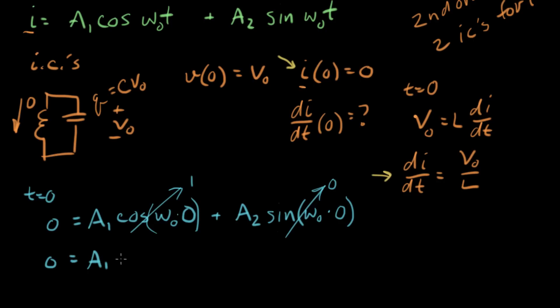A1 equals zero means that this entire term of our solution just dropped out. Let me write what we end up with. I equals A2 sine omega-naught t. This whole term here just dropped out of the solution.